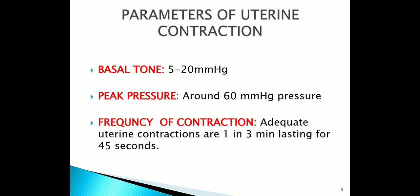There are certain parameters of normal uterine contraction, which include basal tone, which is about 5 to 20 mmHg, peak pressure around 60 mmHg, and frequency of contraction. Adequate uterine contractions are 1 in 3 minutes, lasting for 45 seconds.